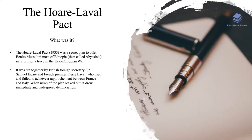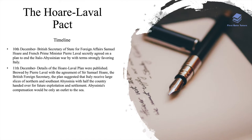The Hoare-Laval Pact was a key turning point in the Abyssinian Crisis. This pact, made in 1935, was a secret plan to offer Benito Mussolini, the leader of Italy, most of Ethiopia — then called Abyssinia — in return for a truce in the Italo-Ethiopian war. It was put together by British Foreign Secretary Sir Samuel Hoare and French Premier Pierre Laval, who tried and failed to achieve a rapprochement between France and Italy. When news of the plan leaked out it drew immediate and widespread denunciation. On 10 December, Hoare and Laval secretly agreed on a plan to end the Italo-Abyssinian war by terms strongly favouring Italy.